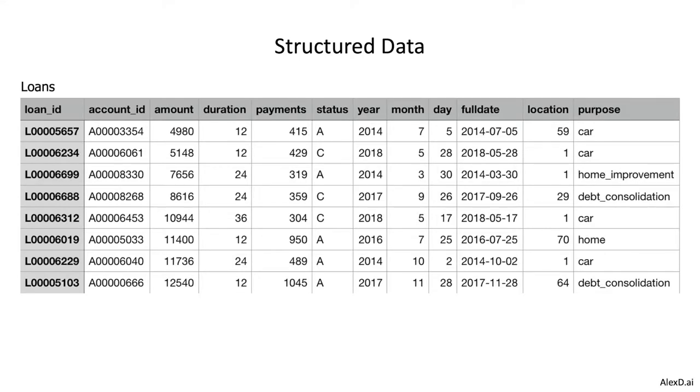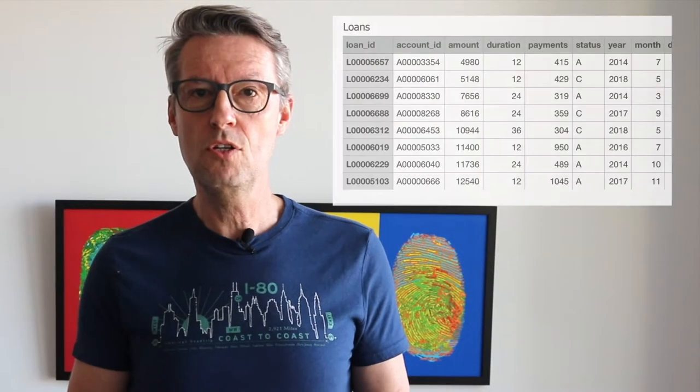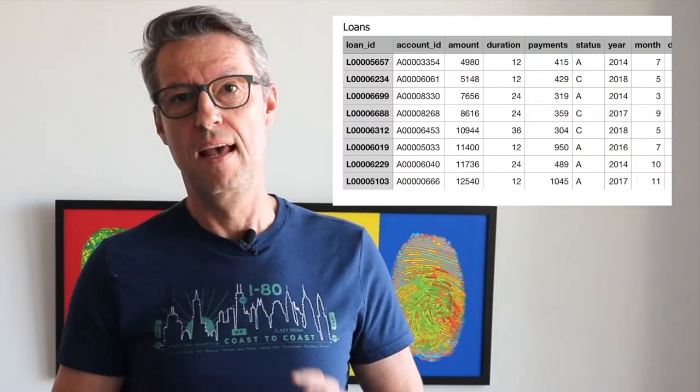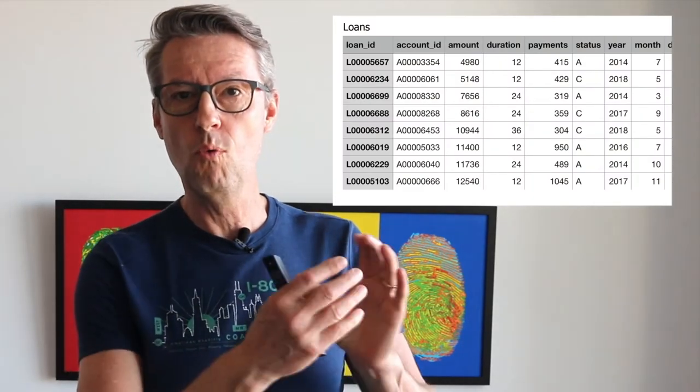Another example: this Loans table here. You have an account ID. Usually there's a rule for how you build account IDs, and you know exactly what to expect here. For example, status in this case — the data will probably be A, B, C, or something like that. You know exactly what the structure is.